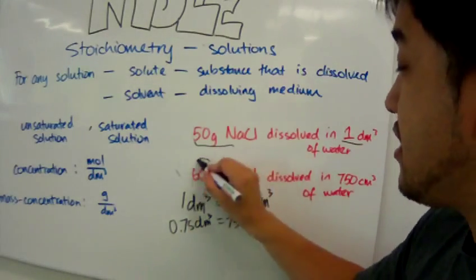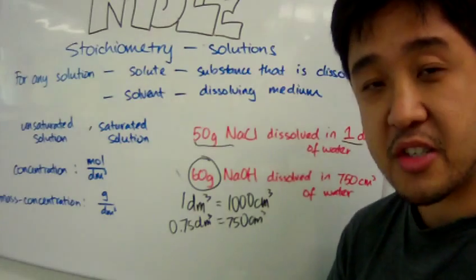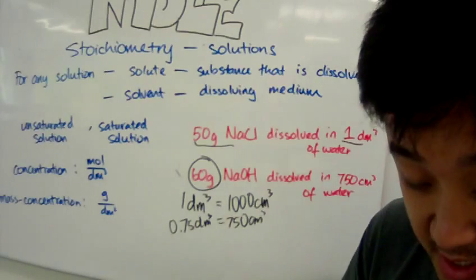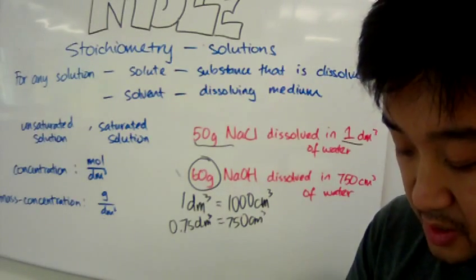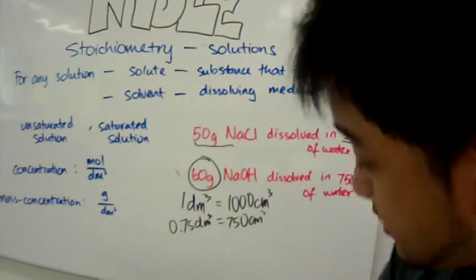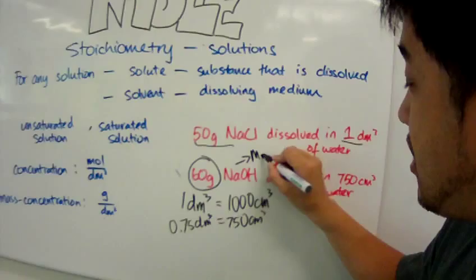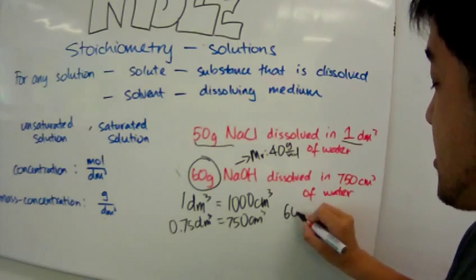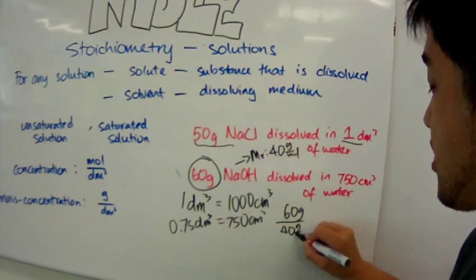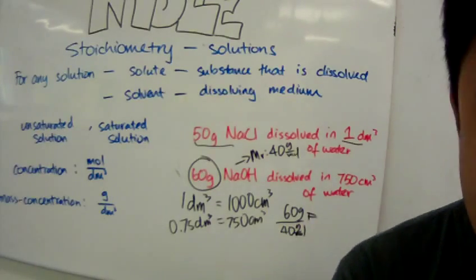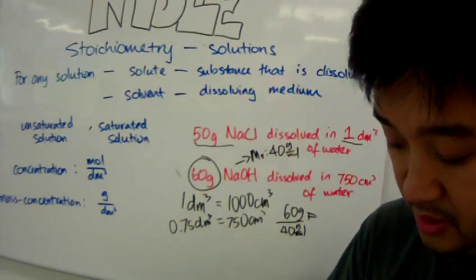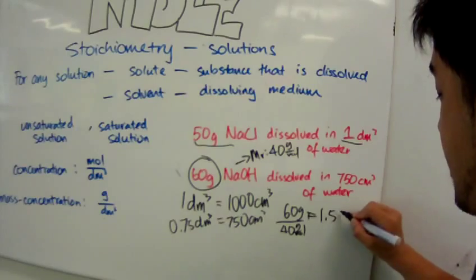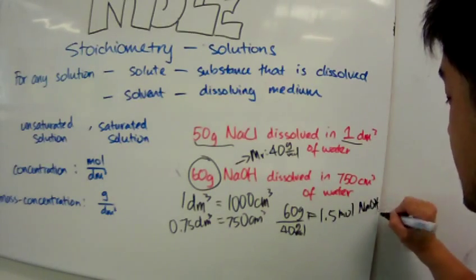Next, convert 60 grams of sodium hydroxide to moles. The molar mass of sodium hydroxide is 23 + 16 + 1 = 40 grams per mole. So the MR of sodium hydroxide is 40 g/mol. Taking 60 grams divided by 40 grams per mole gives 1.5 moles of sodium hydroxide.